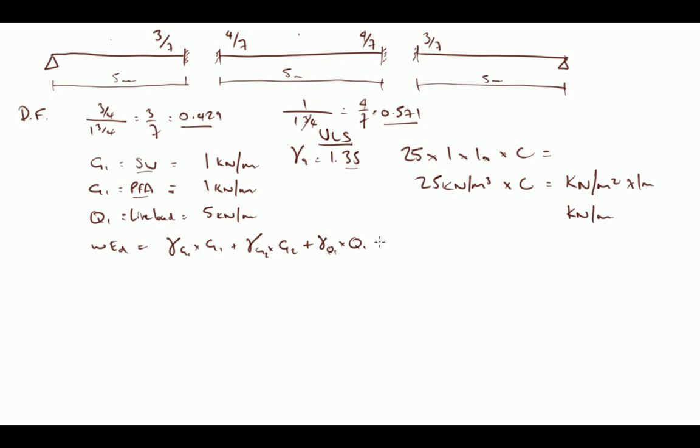We would further add the sum of all the other combination live loads or variable actions, multiplied by their combination factor psi 0. But because we don't have any, we don't need to worry about that in this situation. Gamma q for this problem buildings is 1.5. Because our variable actions are less predictable than our permanent actions, we increase that load at ultimate limit state by a full 50%, making sure that we've got enough capacity in our structure. That's because it's less predictable, so we use a bigger factor to multiply that by.